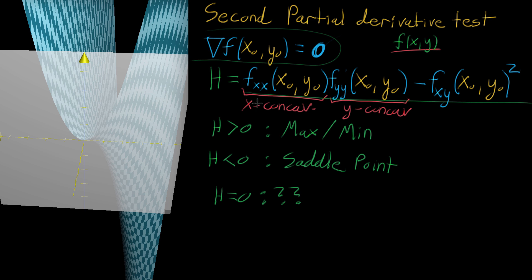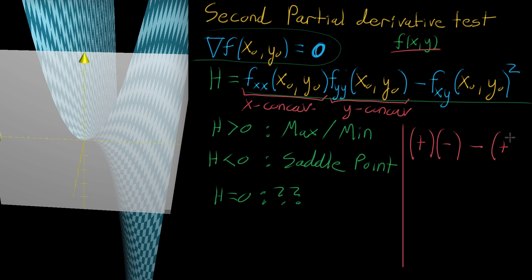Notice what happens if these disagree — if x implies positive concavity and y implies negative concavity. That means the first term is a positive times a negative, which is negative. The mixed partial derivative term that we subtract is always squared, so it's always positive. You're always subtracting a positive term, meaning if the first term is negative, the entire H is definitely negative — putting you in saddle point territory. This makes sense: if the x and y directions disagree on concavity, that should be a saddle point.